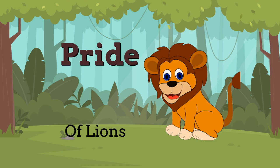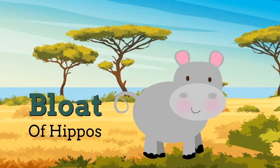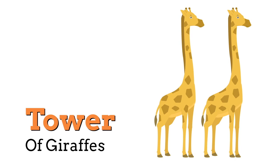If you've seen The Lion King, I bet you already know that a group of lions is called a pride. I also love this one — a group of hippos is called a bloat. A group of giraffes is called a tower. That makes perfect sense to me; they're so tall they tower over everything.